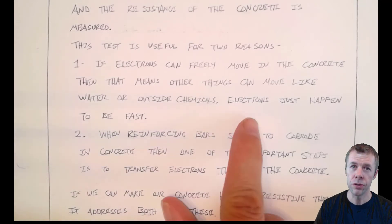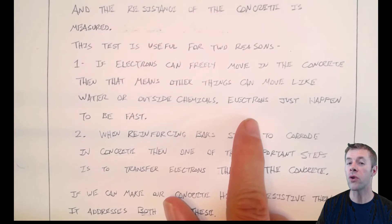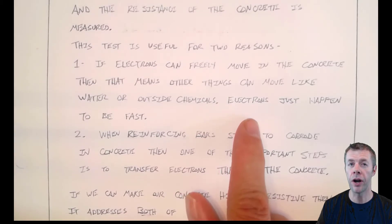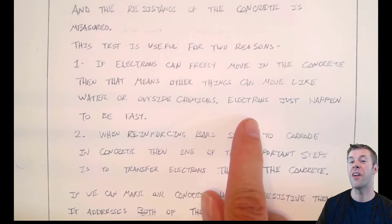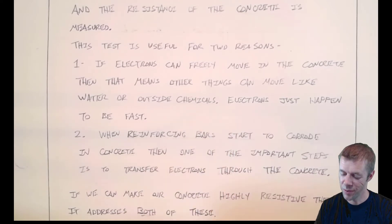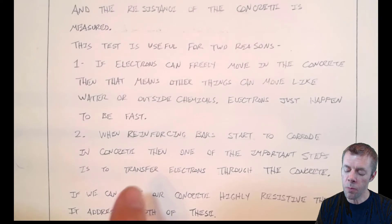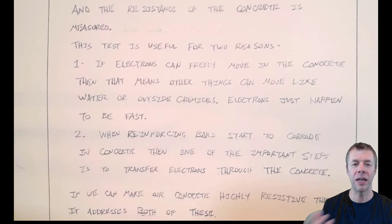And it's kind of an indication, if they move quickly, that water or outside chemicals could also easily penetrate into the concrete. We'd use electrons because they just happen to be fast. Now there are other test methods out there that do use water and do use chemicals, and they're quite useful. But they're not as fast as this test. So this test, people like it better.